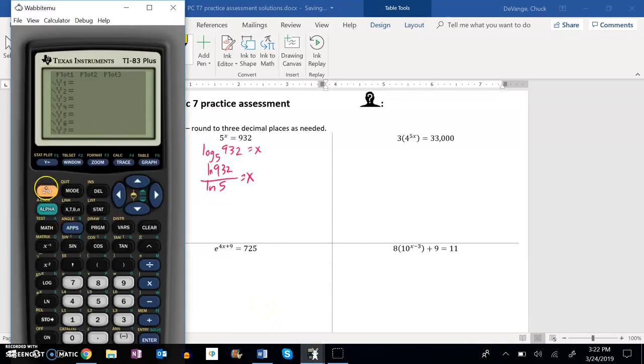So let's see, natural log of 932 divided by natural log of 5. And I notice I get about 4.2482.